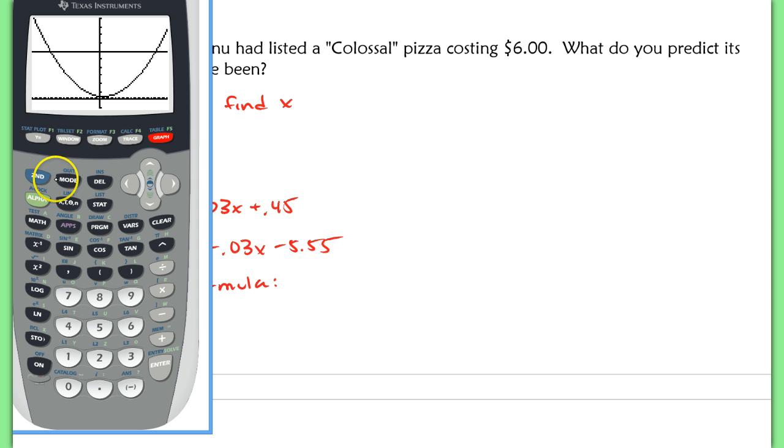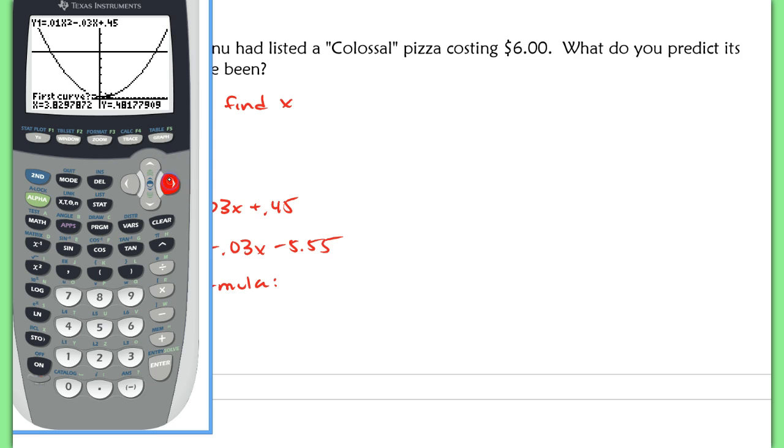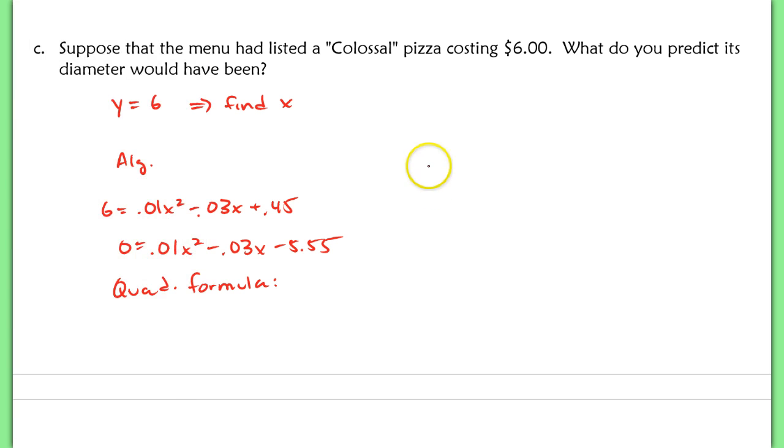Now, at this point, I want to hit 2nd calc, intersect. When you're doing the first curve, second curve, it doesn't matter which curve you're technically on. But you want to get close to whatever intersection that you're looking for. So I need to get closer to this one. Hit enter, and it'll find the closest intersection between these two, which is at 25.106, 6. So we have one point at (25.106, 6).